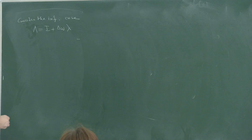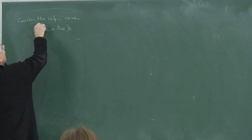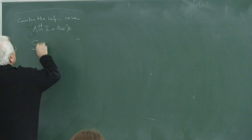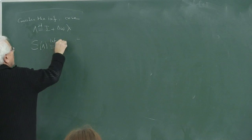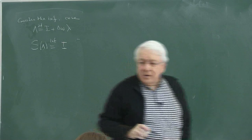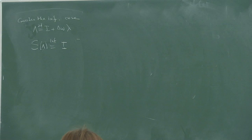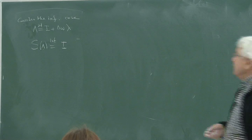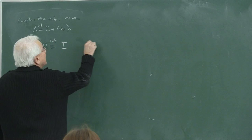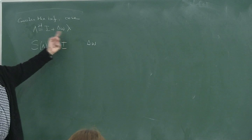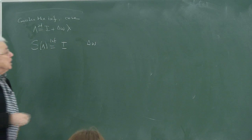How do I construct S for the infinitesimal case? S(lambda) should deviate from one — when the parameters go to zero it should reduce to one — and the additional amount should be proportional to the infinitesimal parameter delta-omega. It should also involve the capital lambda's relevant term.